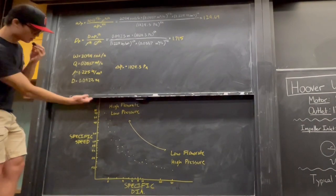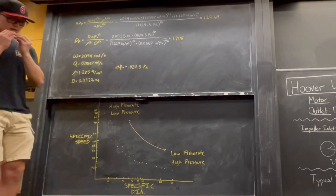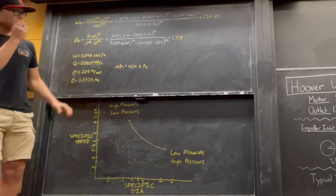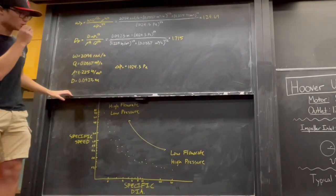With these two values, we can place our pump on the specific speed versus specific diameter graph. Because our specific speed is so high...